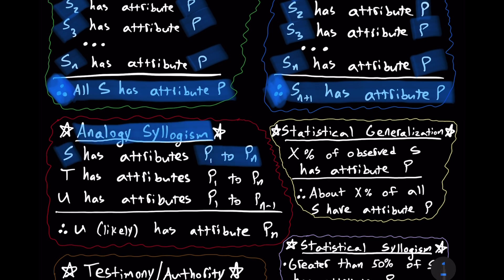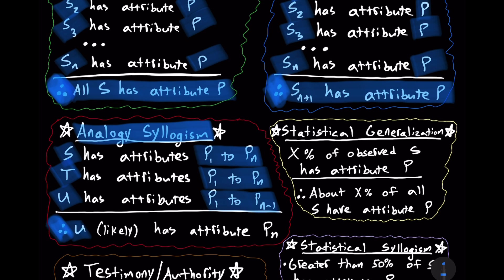The next thing to consider is an analogy syllogism. S has attributes P sub one to P sub N. So, it has the attribute P sub one, P sub two, P sub three, and so on to P sub N. T, likewise, has attributes P sub one to P sub N. Again, U has attributes P sub one to P sub N minus one. So, because it has all the attributes from one to N minus one, therefore, it seems likely that U has attribute P sub N as well. Note there's always a comparison between two or more things in an analogy. A similarity is found. It's not a matter of simply counting similarities. It's more importantly a matter of finding relevant similarities so as to be able to draw the conclusion. Relevancy is key. That's paramount, ultimately. You might find a lot of similar attributes, maybe a ton of them, but they might have no importance or relevancy.